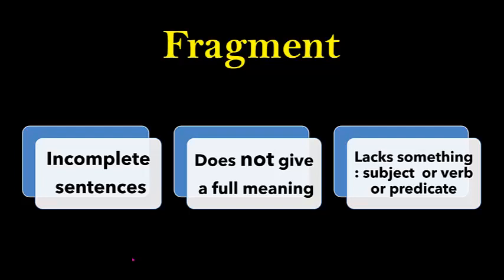A fragment lacks something — it lacks a subject, or a verb, or a predicate. You need to know that the predicate is the verb plus what comes after it; the complete predicate is the rest of the sentence starting from the verb. So a fragment is an incomplete sentence that doesn't give a full meaning — something is missed. Considering the structure, there is a main part missing: either the subject, the verb, or the predicate in general.